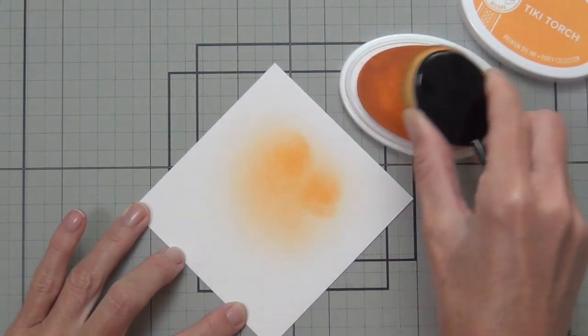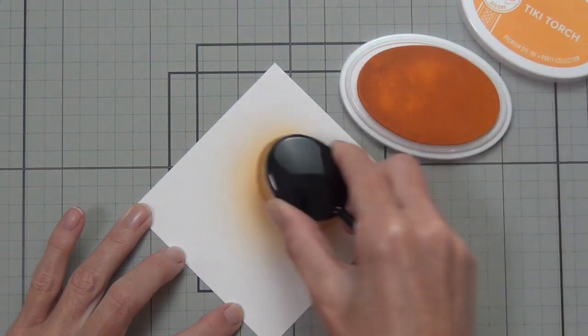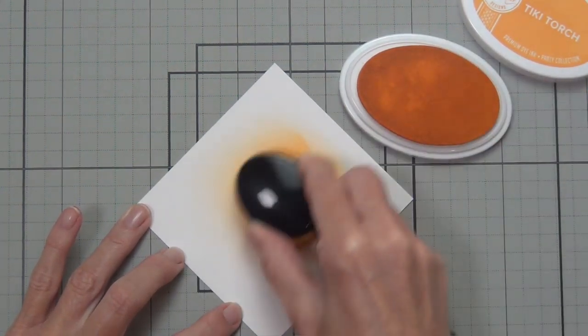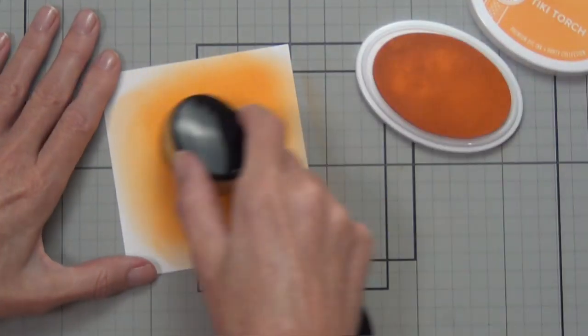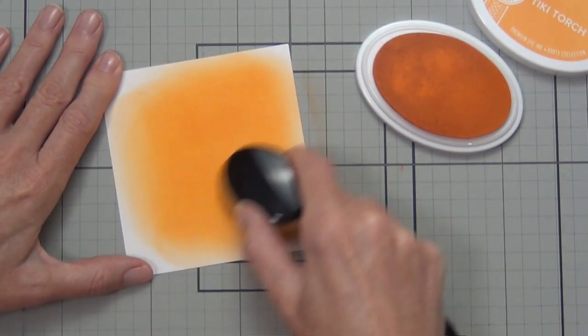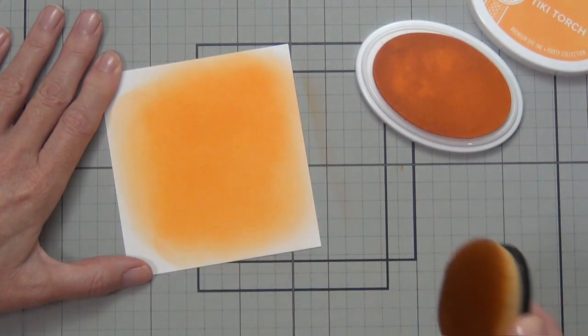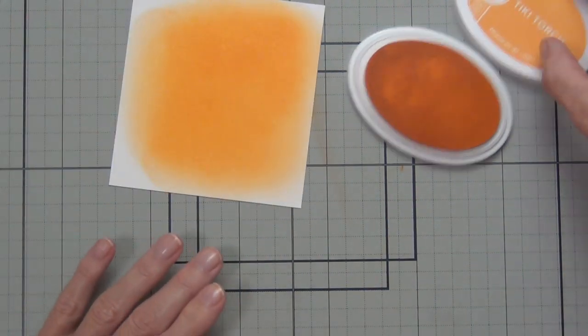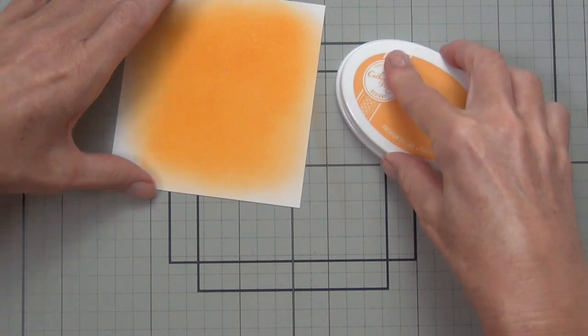The colors that I'm using today are some Catherine Poolers, and I'm using the blending brushes on Bristol Smooth cardstock. I've got Tiki Torch, Party Dress, Lime Rikki, and Fiesta Blue.